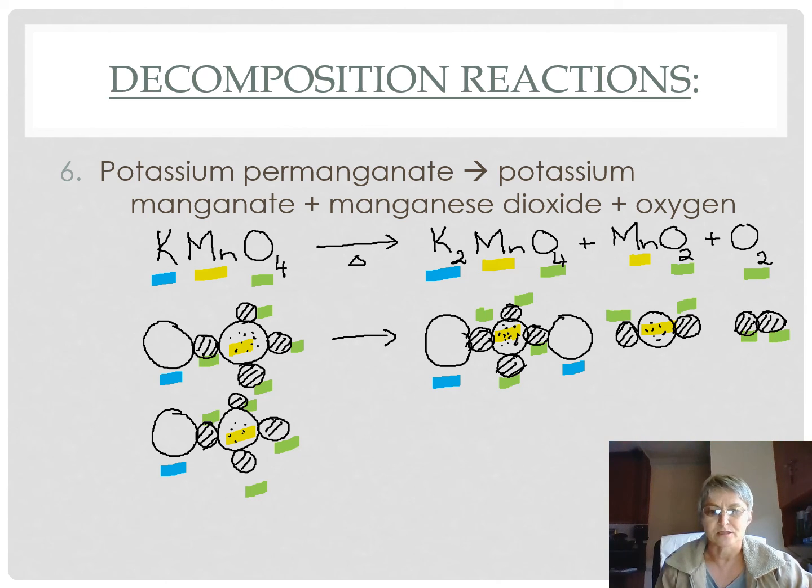That balances the potassium, the manganese and the oxygen. So, I see from my ball diagrams that I need 2 potassium permanganate to make 1 potassium manganate, 1 manganese dioxide and 1 oxygen. This ends off this section on chemical change and reaction. Thank you for watching.